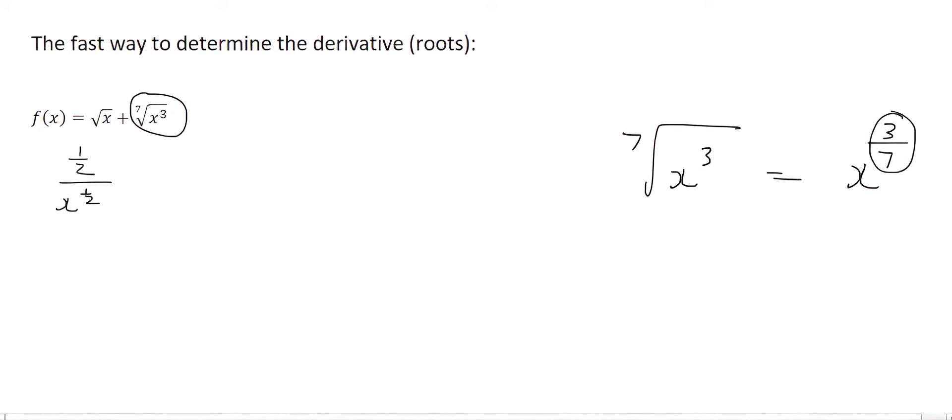Then you just do the same thing, so you multiply that to the front, so that will be 3 over 7. Then you minus 1 from that, which will give you negative 4 over 7. And so you're left with 3 over 7 over x to the 4 over 7. So the final answer for this one is 3 over 7 over x to the 4 over 7.